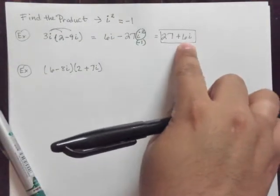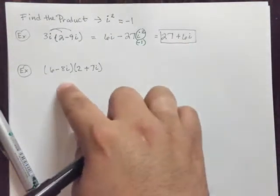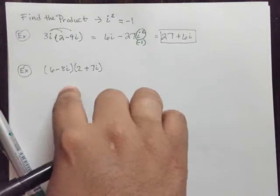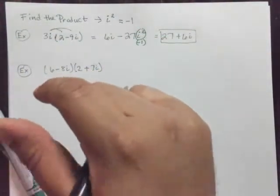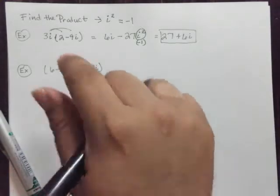And remember, it's got to be in this form, a plus bi. Now, in this case, this should be very familiar. If you've ever done the FOIL method, that's exactly what we're going to do right here at this point in time.